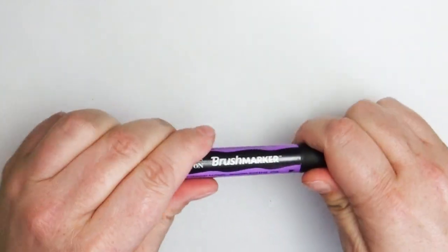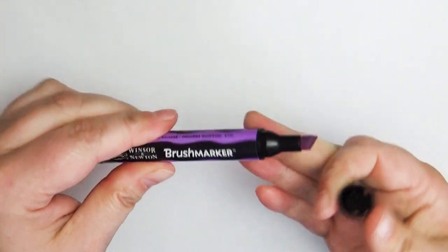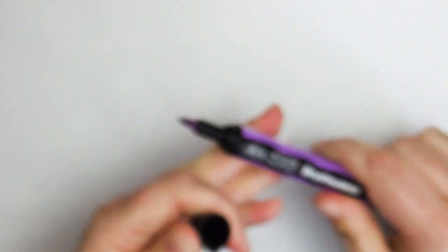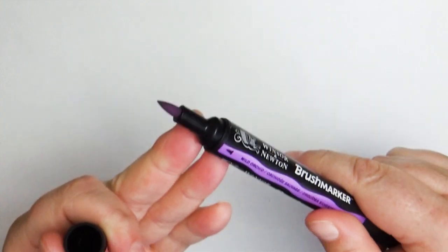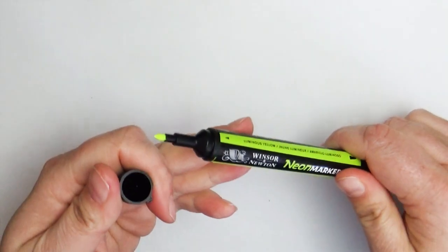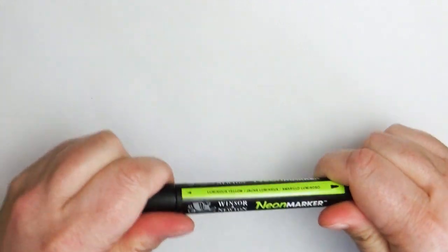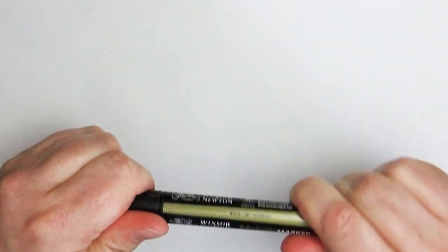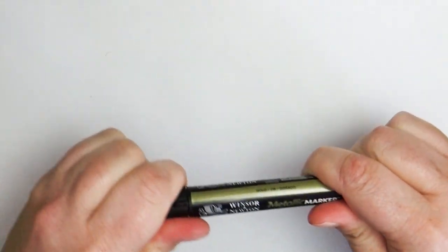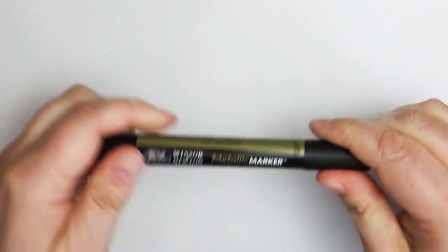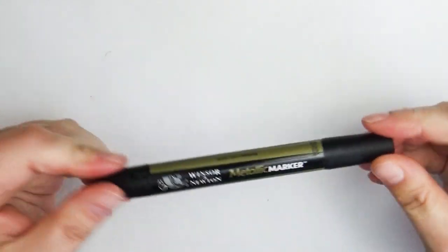The next kind are the brush tip markers which also come with a chiseled tip on the back and then a brush nib very similar to the Copic on the front end. These are the neons which come with a small bullet nib on one end and a large bullet nib on the other end. The metallics are exactly the same, with a small bullet nib on one end and a large bullet nib on this end. So I'm super excited to give these a test out.